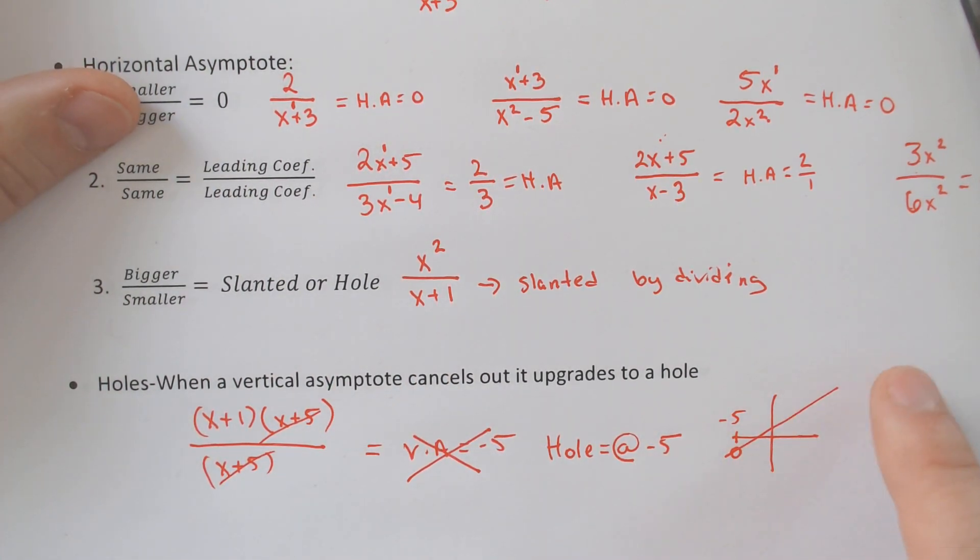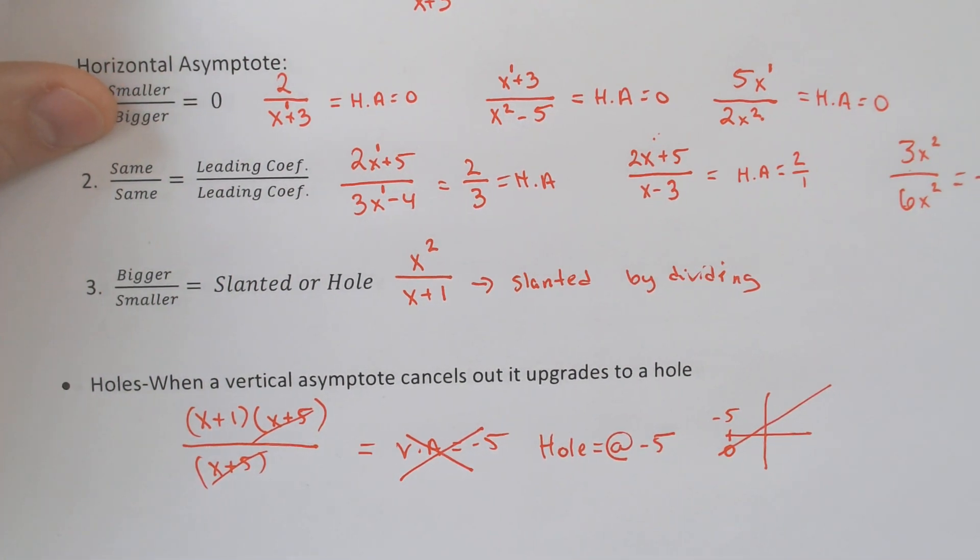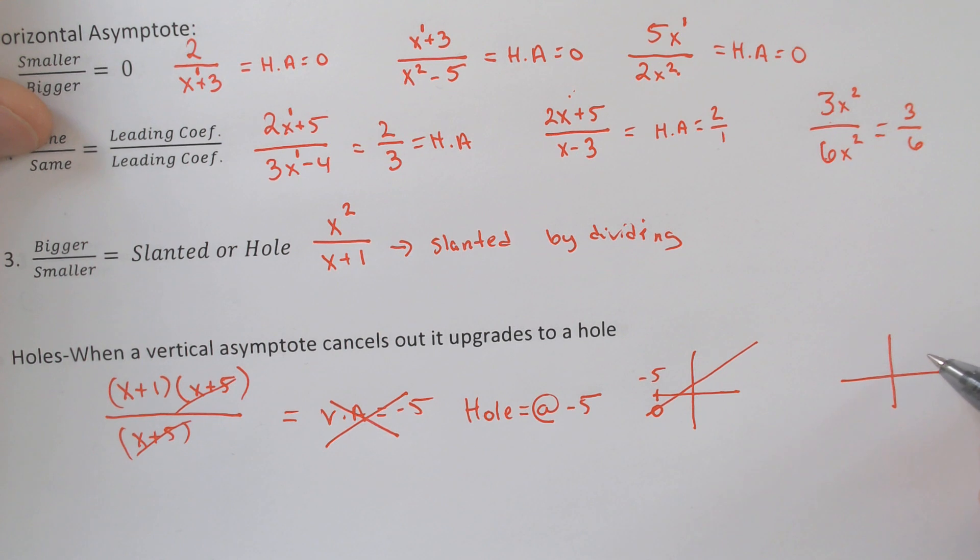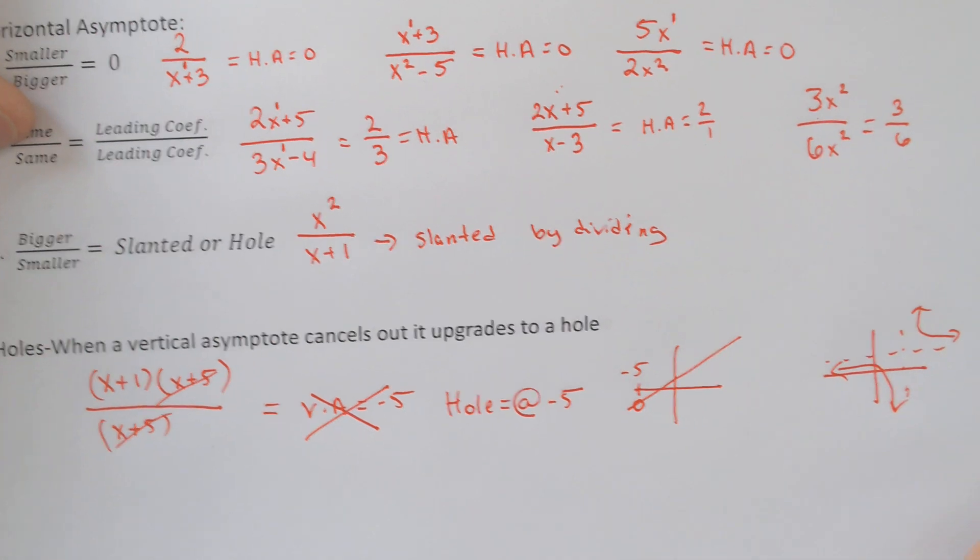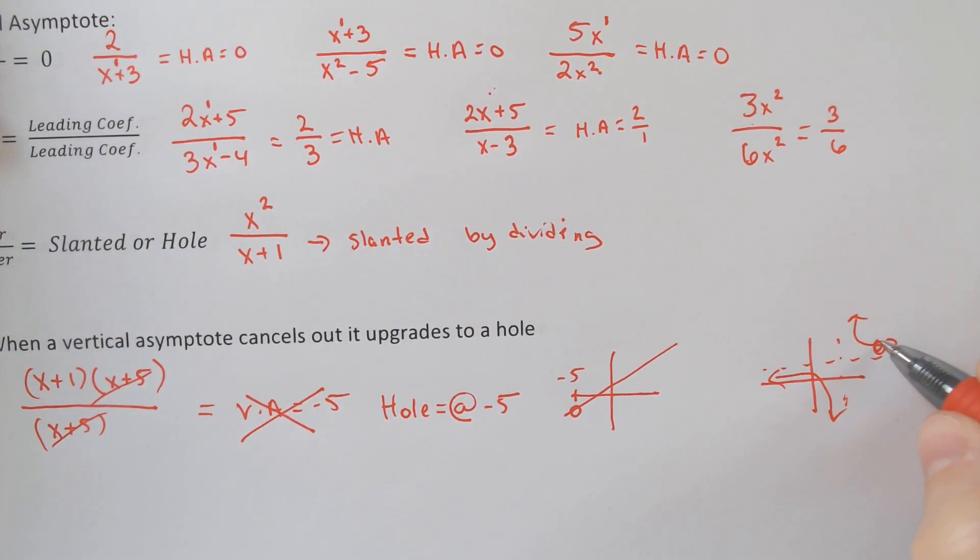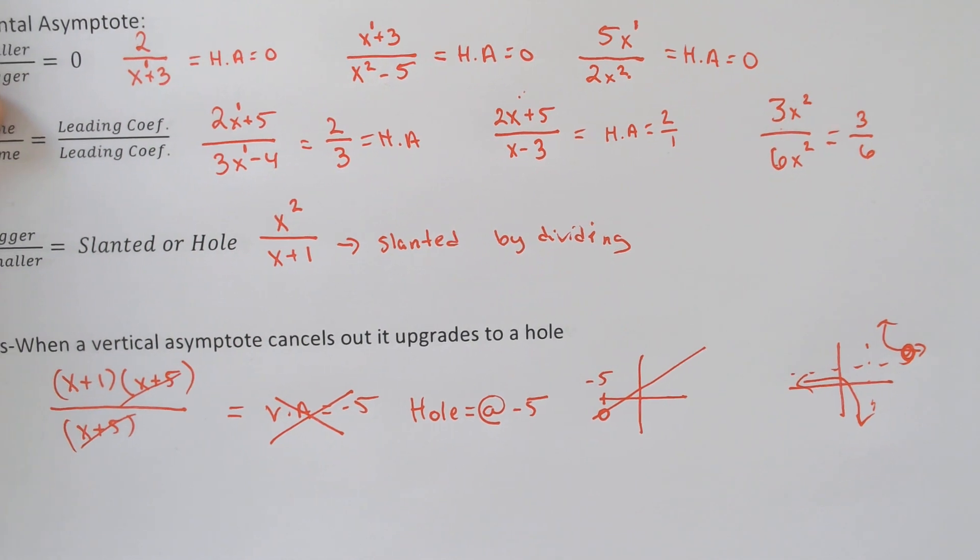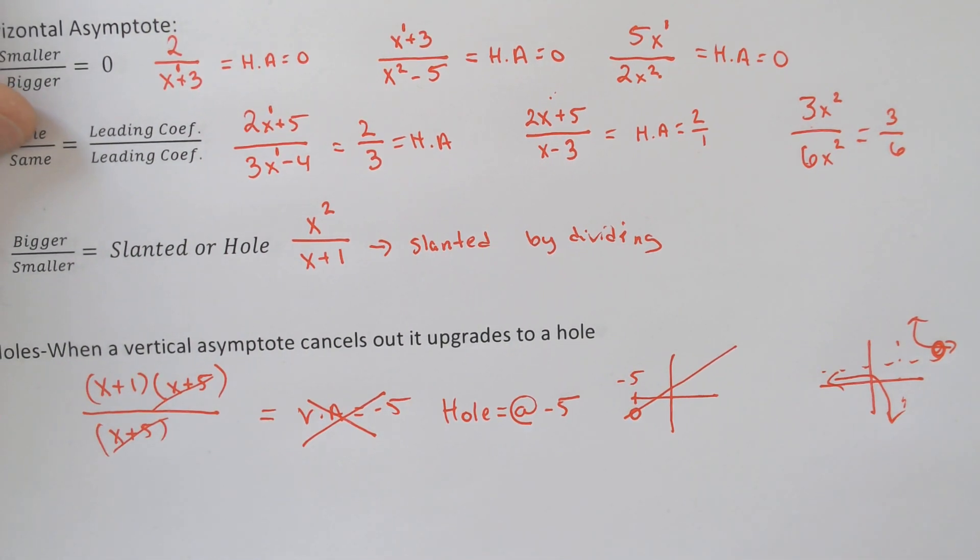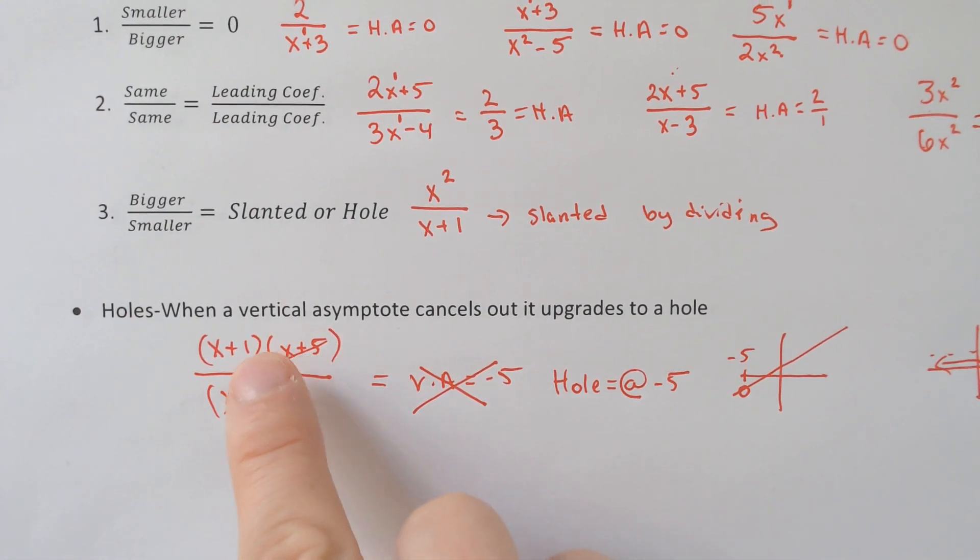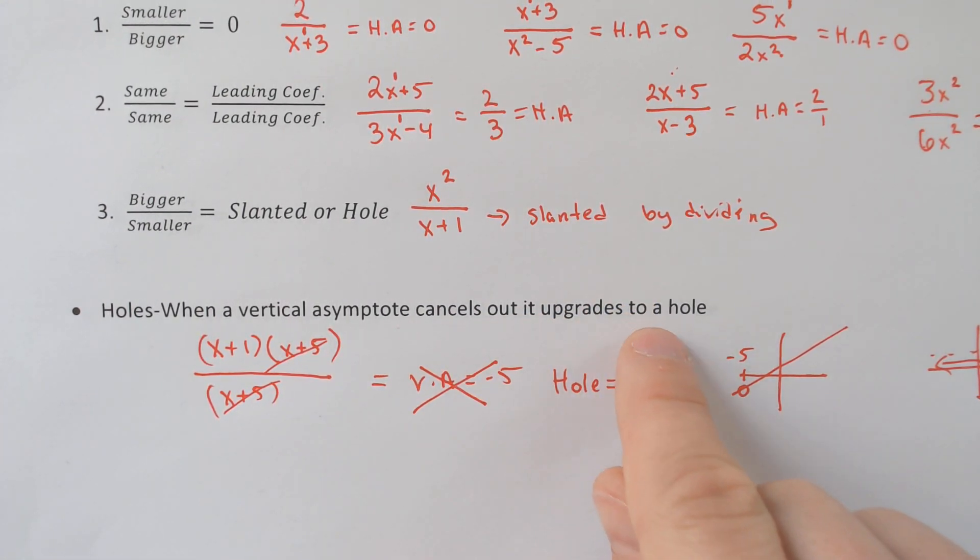So the holes can either happen on a line, but they could have also happened on a scenario where you had a vertical asymptote and a horizontal asymptote. There could be other scenarios where the hole exists on regular, normal-looking rational graphs, okay?